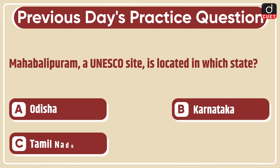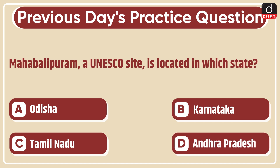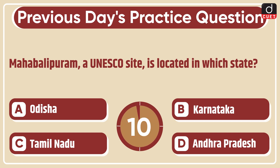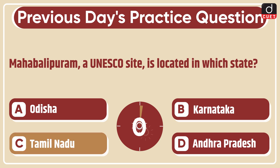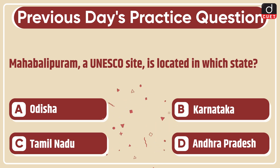Question was: Mahabalipuram, a UNESCO site, is located in which state? Odisha, Karnataka, Tamil Nadu, or Andhra Pradesh? The correct answer is option C, Tamil Nadu.